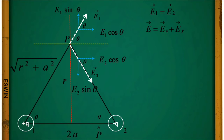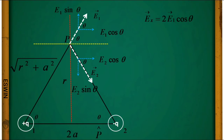The x-component of the electric field is E1·cos θ + E2·cos θ, and the y-component is E1·sin θ + E2·sin θ. Since E1 = E2, the y-components cancel out and only the x-components remain. So we can write Ex-bar = 2E1·cos θ, or simply 2E·cos θ.